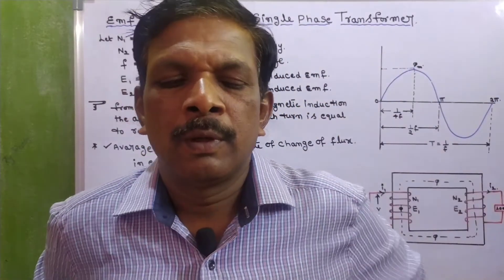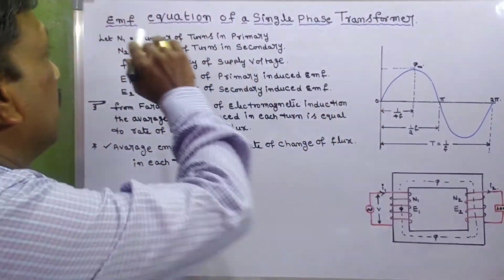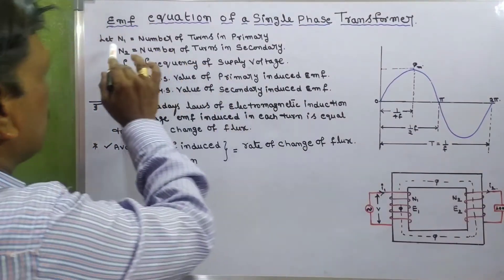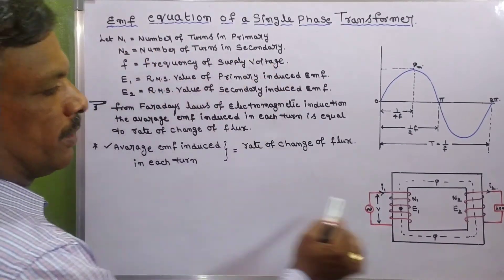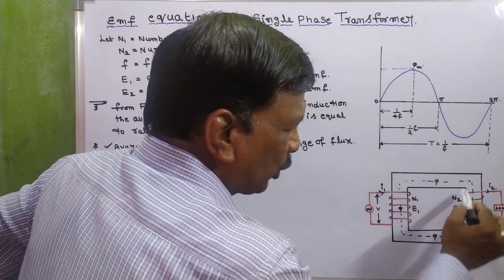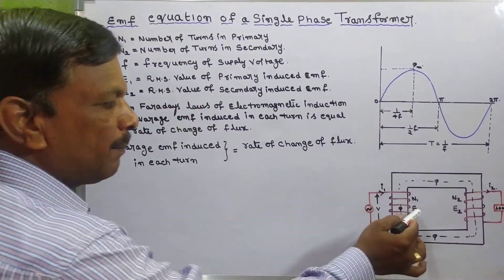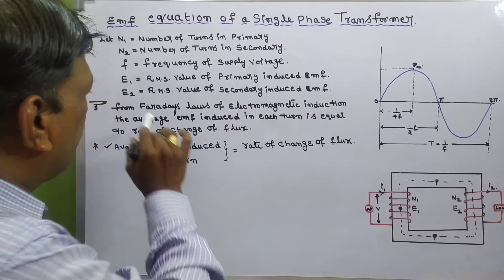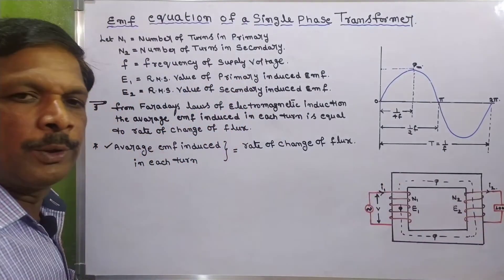Dear students, in this video we are going to derive the EMF equation of a single-phase transformer. So first of all, let N1 be the number of turns in the primary winding, N2 be the number of turns in the secondary winding, E1 be the RMS value of the primary induced EMF, and E2 be the RMS value of the secondary induced EMF.